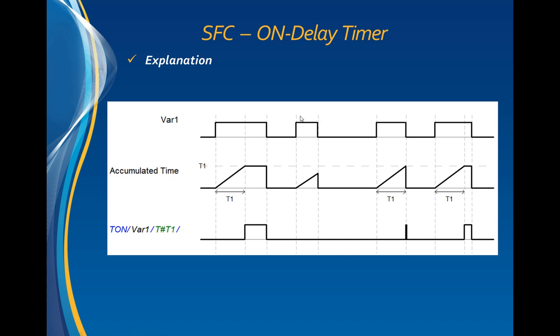When the input variable goes to true again for a certain period of time less than the preset time t1, the accumulated time will never reach the value of t1, and the output of the timer will never be true.